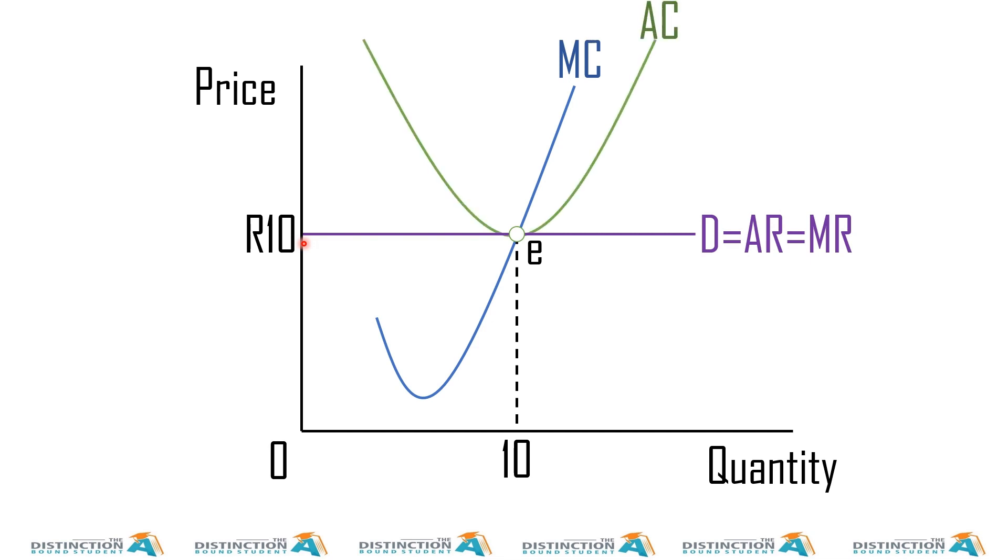So in this case, we put our average cost curve. And as you can see, our average cost is equal to our average revenue. And according to our profit-loss rules, we know that we can't really call it a rule, but when AR is equal to AC...